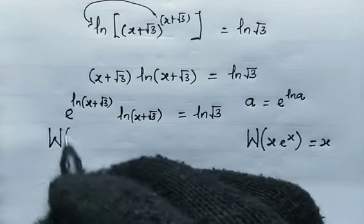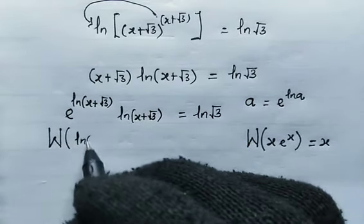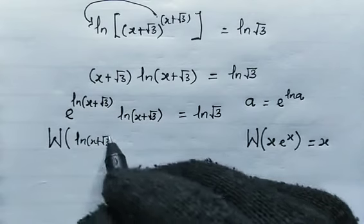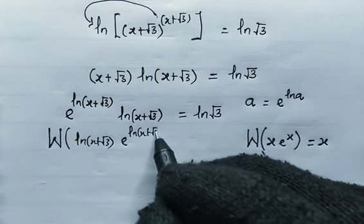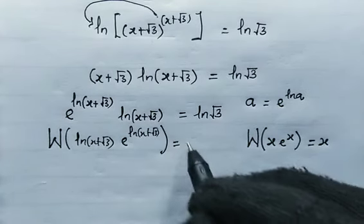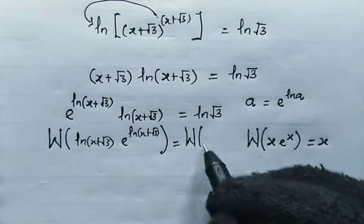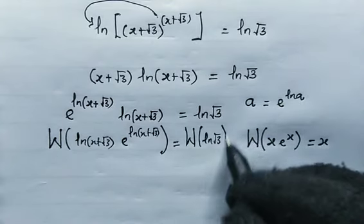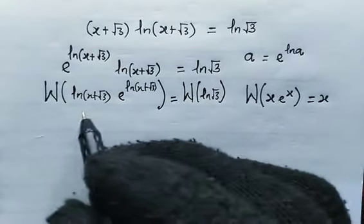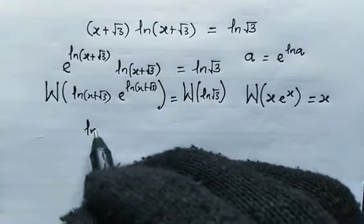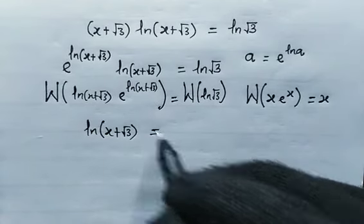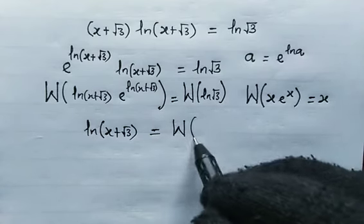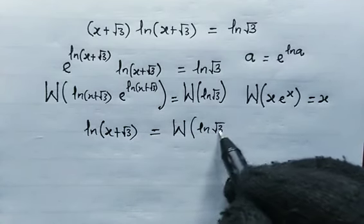...making use of the Lambert W function on both sides. Natural log of x plus root 3, multiply by e raised by of the natural log of x plus root 3. This will be equal to W of the natural log of root 3. So from here, this left-hand side simplifies to just the natural log of x plus root 3. And this equals the W of the natural log of root 3.